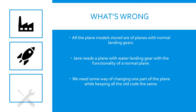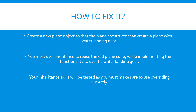We need some way of changing one part of the plane model while keeping all the old code the same. Your job is to create a new plane object so that the plane constructor can create a new plane with water landing gear.